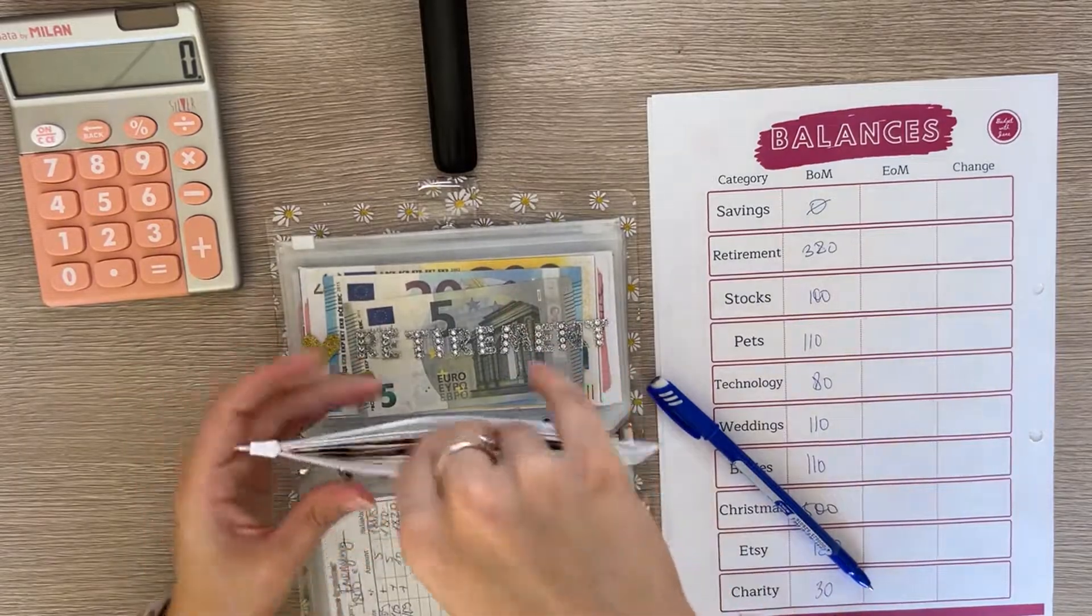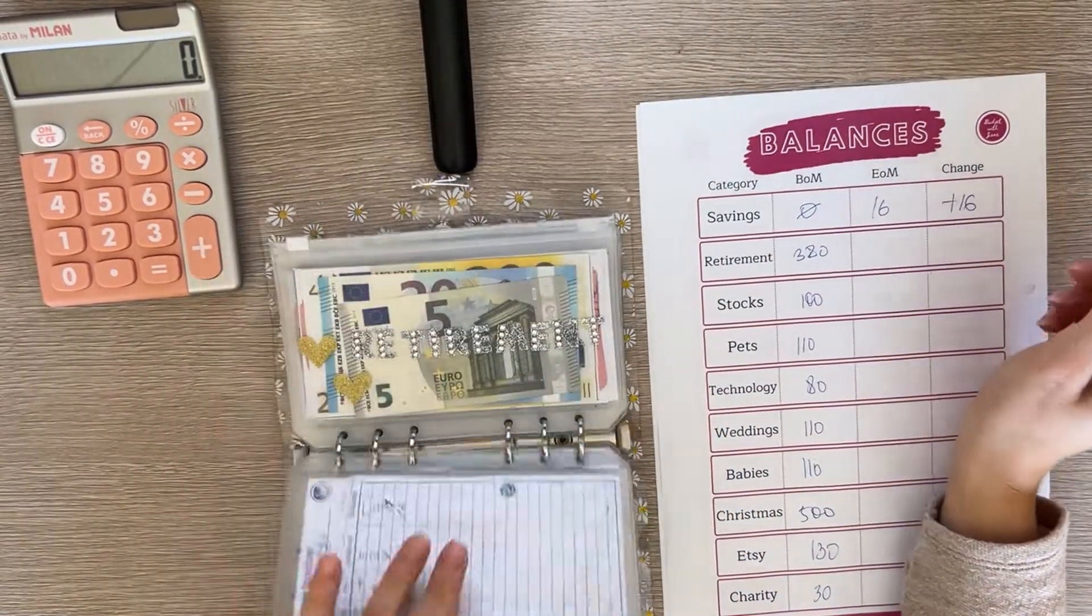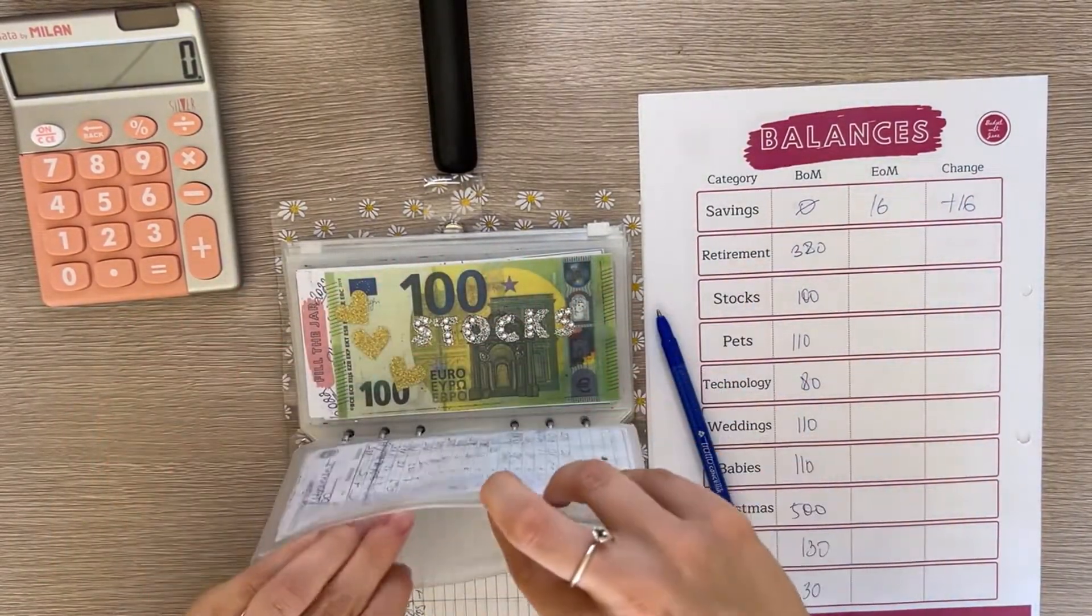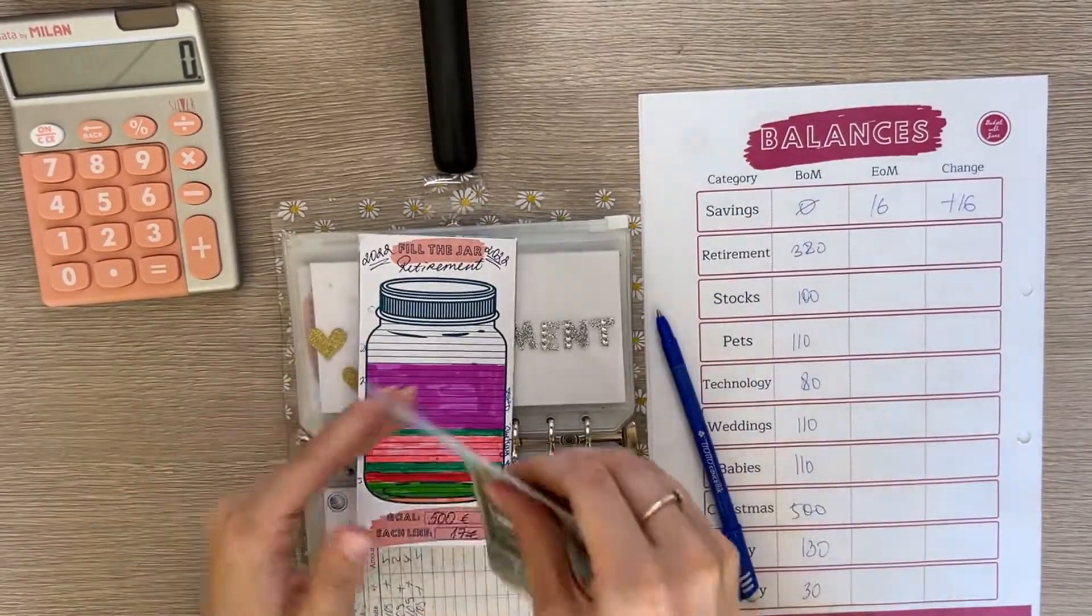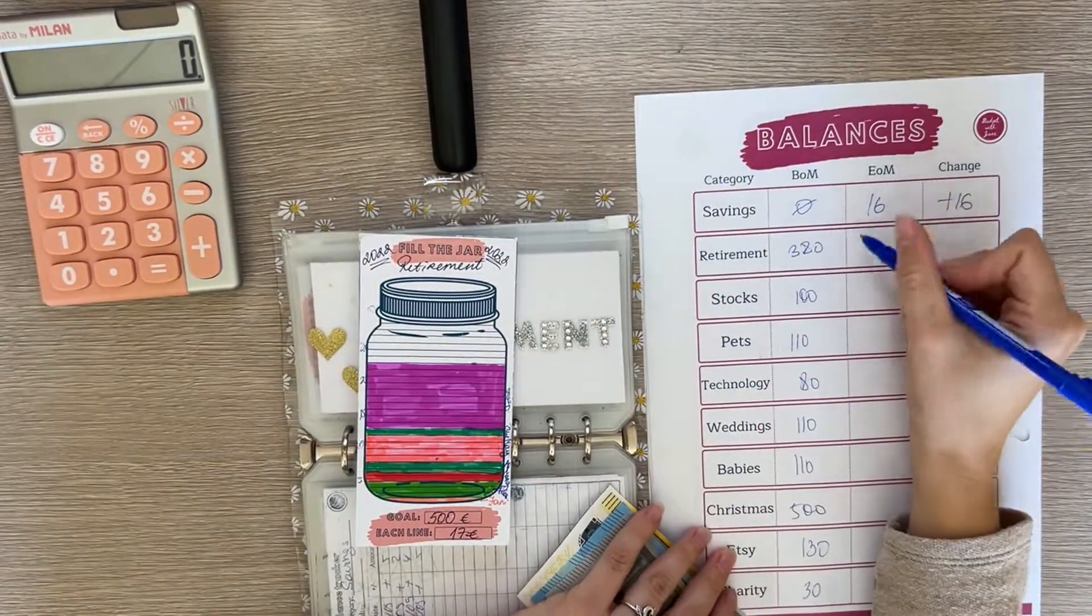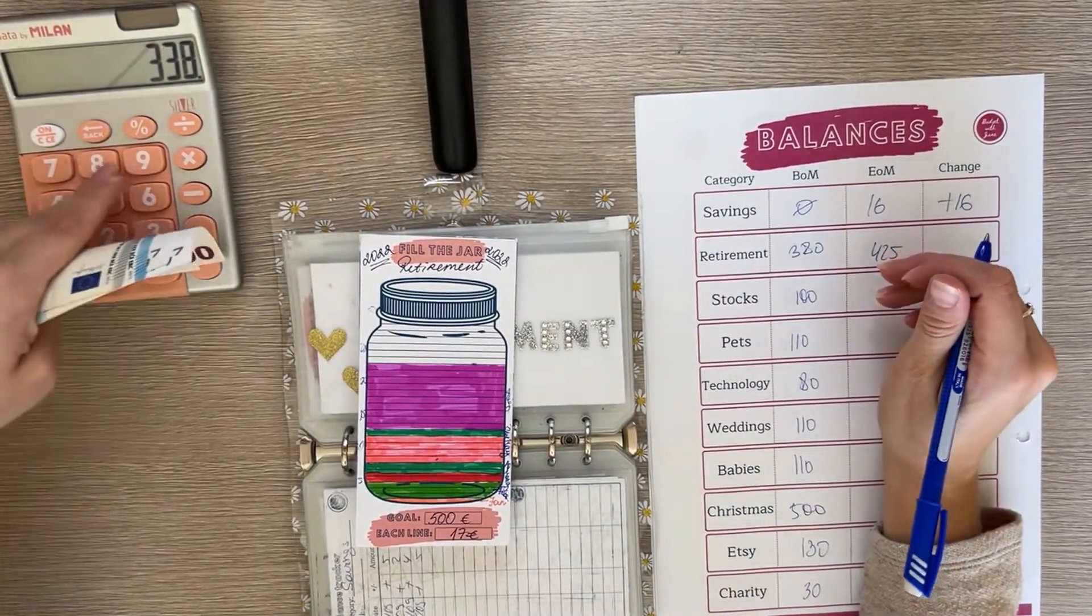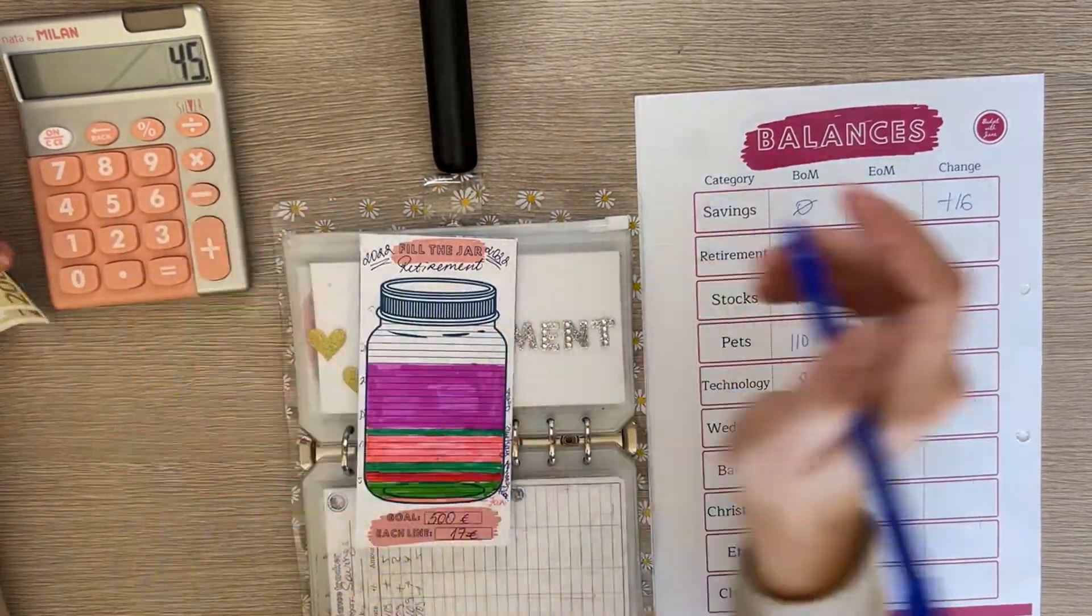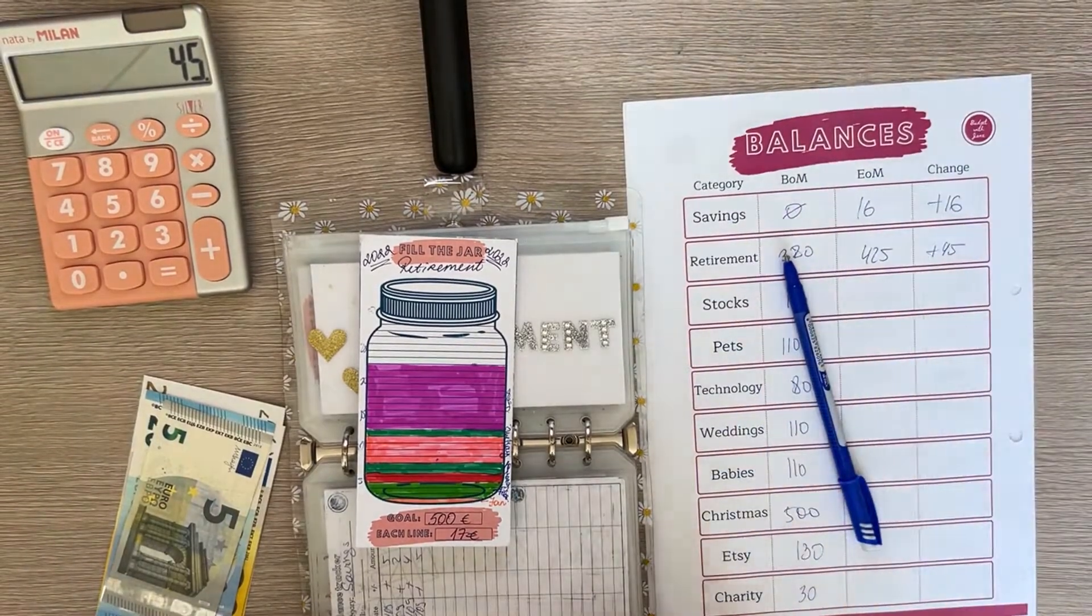Then retirement is another one where we can color in the tracker and I'm so excited to see what the progress is. We have $425 and that's a positive 45 euros.